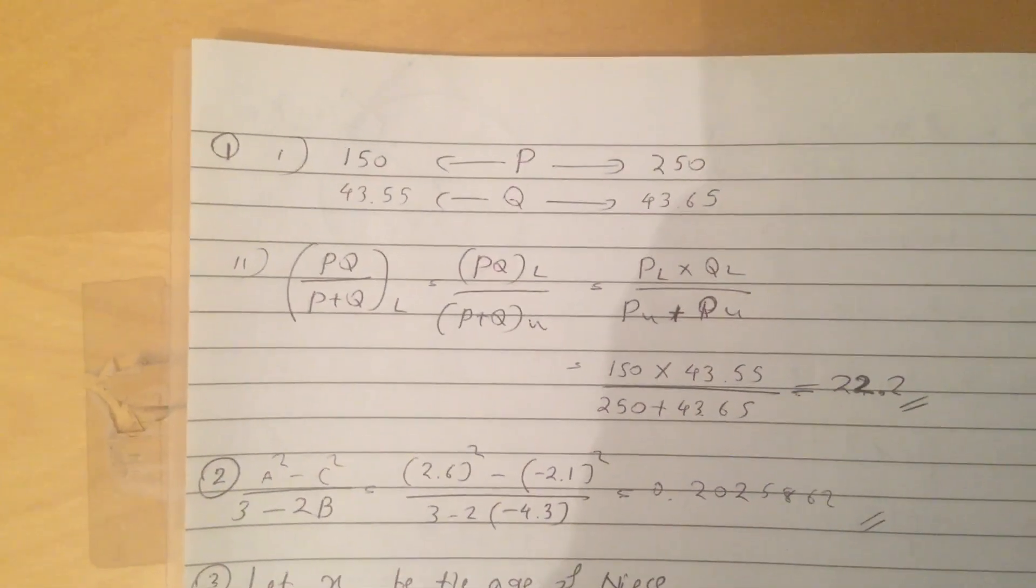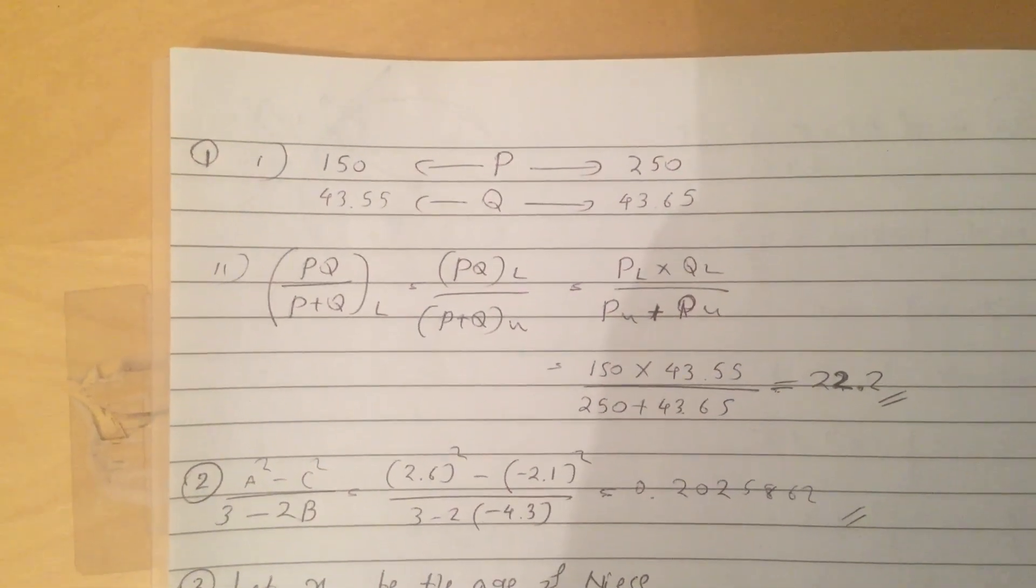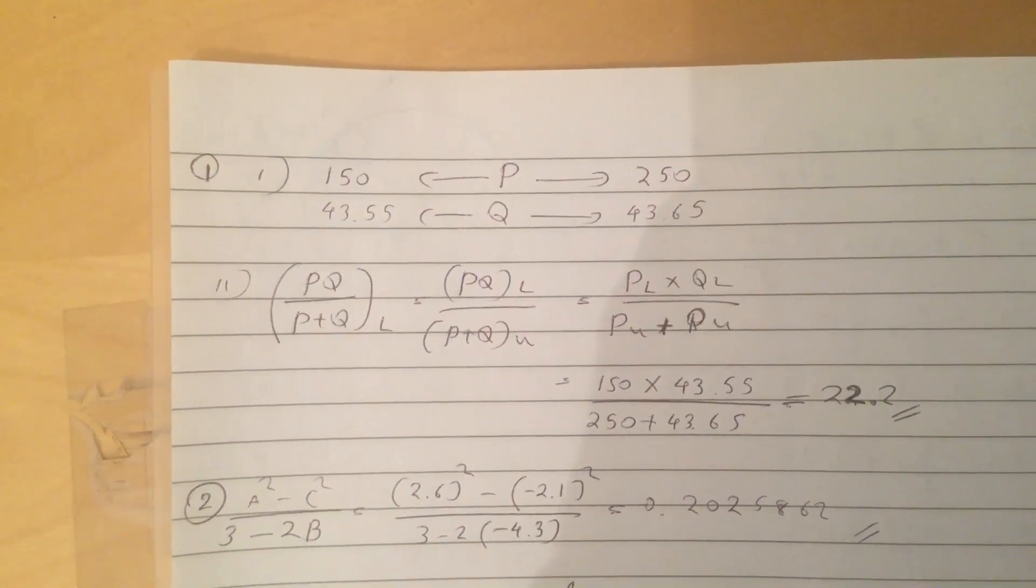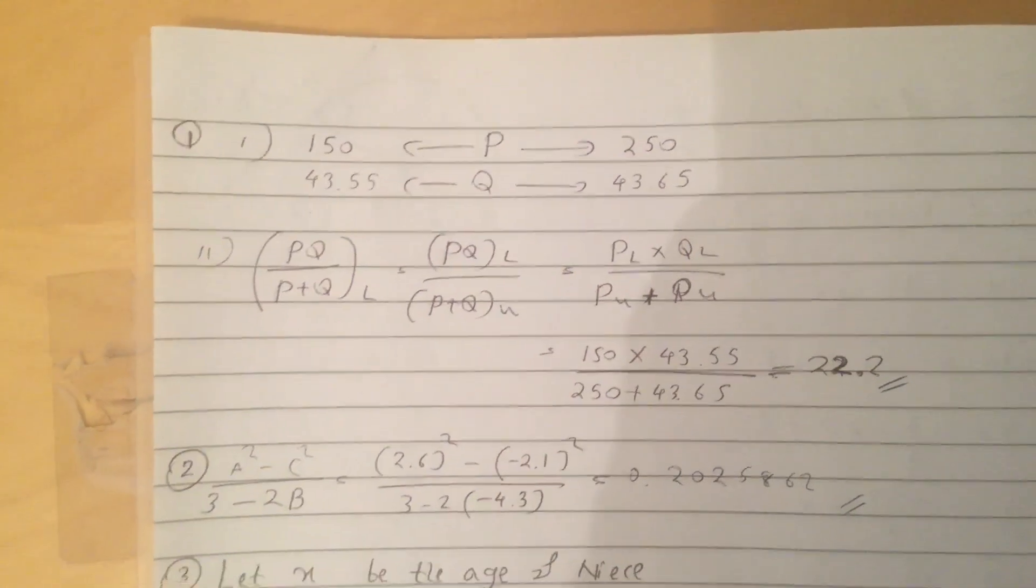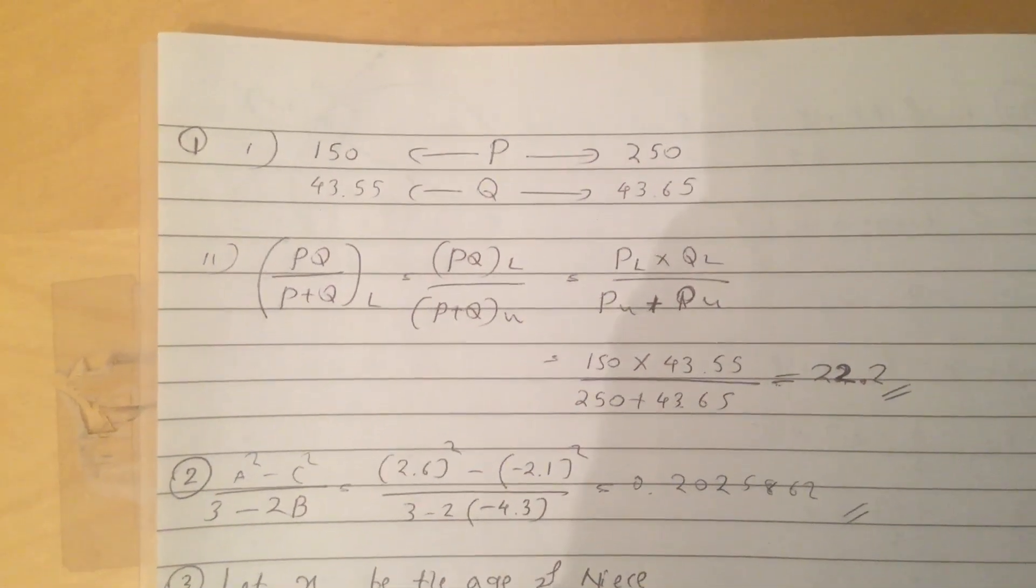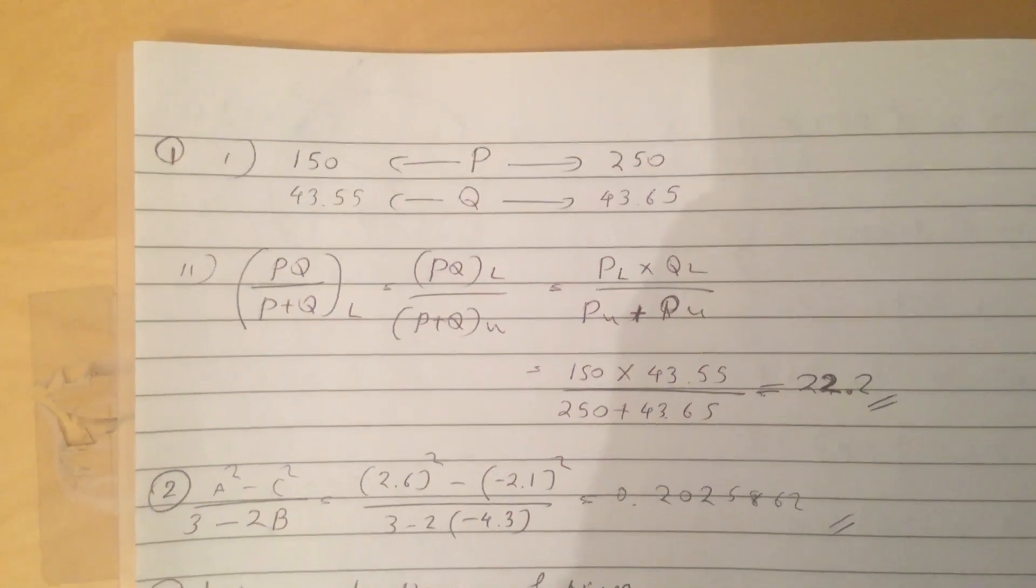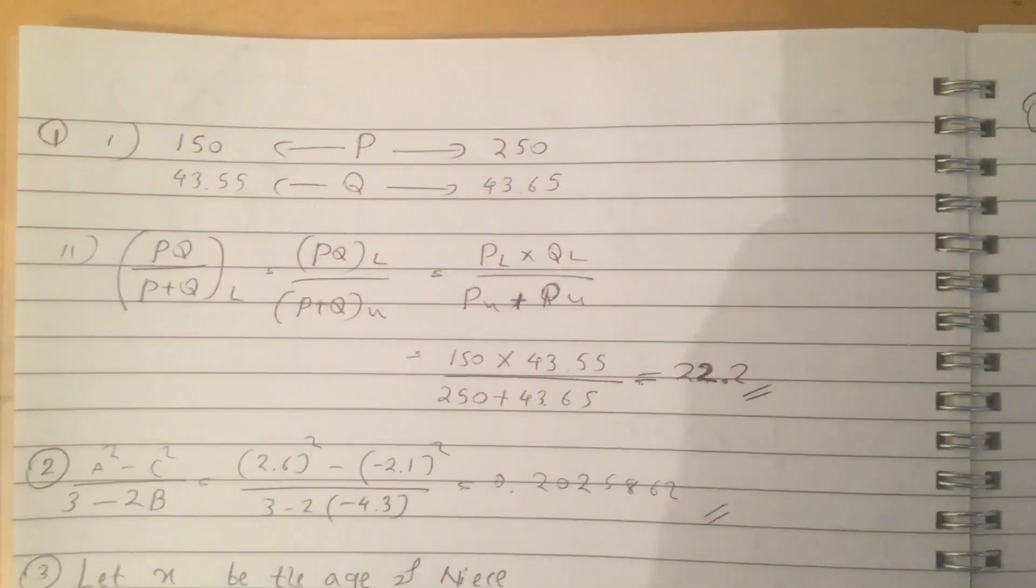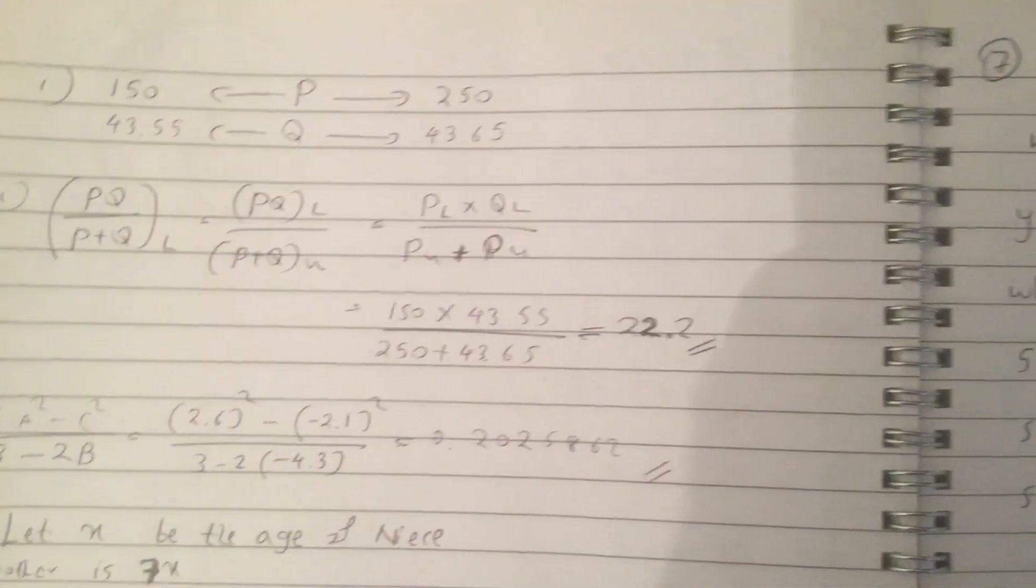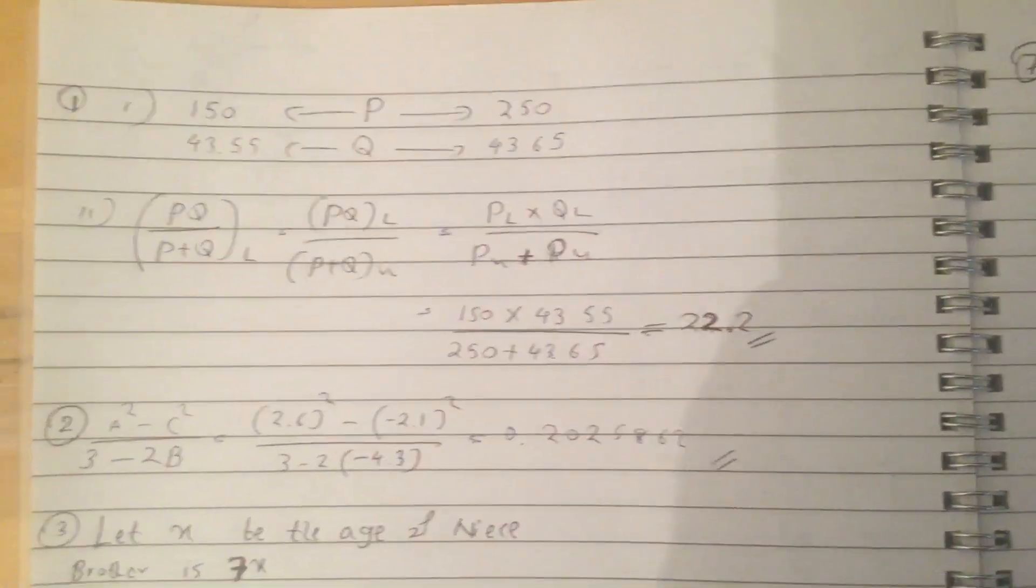So question 1, the upper and lower bound for P and Q. For P is 250 and 150, for Q it's 43.65 and 43.55. So PQ over P plus Q lower bound is equal to PQ lower bound over P plus Q upper bound, and then you break them individually, and then you plug it in and you get the value 22.2.